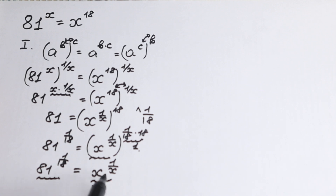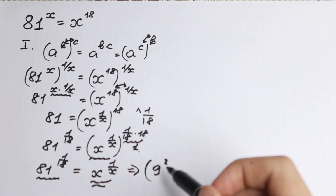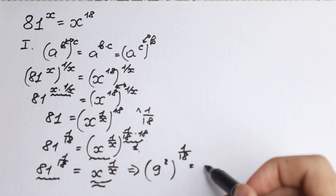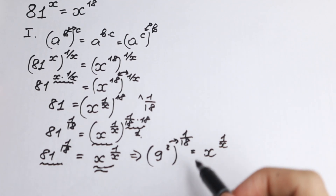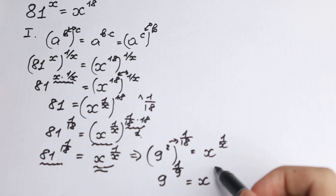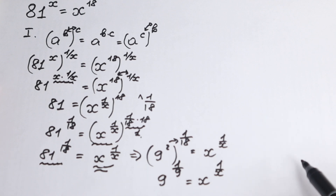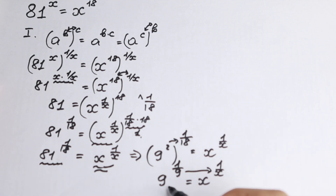This is a constant on the left, and x to the power 1 over x is our variable expression. We can write 81 as 9 squared, so 81 to the power 1 over 18 becomes 9 squared to the power 1 over 18, equal to x to the power 1 over x. Multiplying 2 times 1 over 18 gives 9 to the power 1 over 9, equal to x to the power 1 over x. So x must equal 9, and our root is x = 9. This is the first really interesting tricky method.